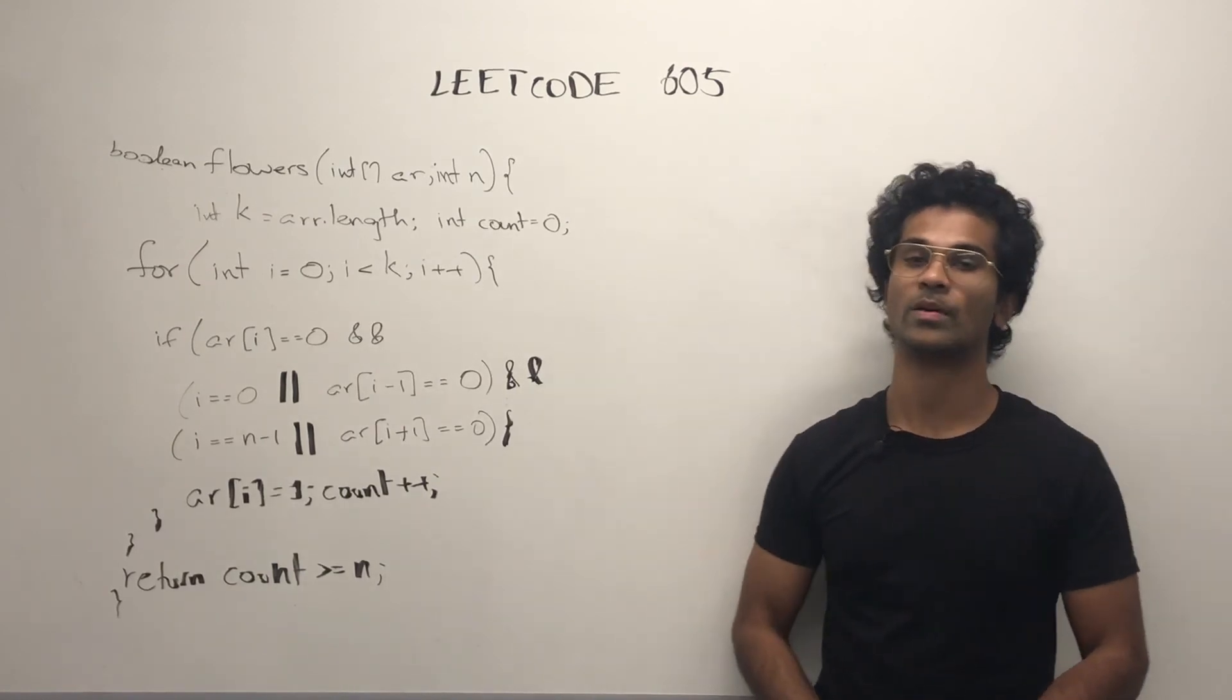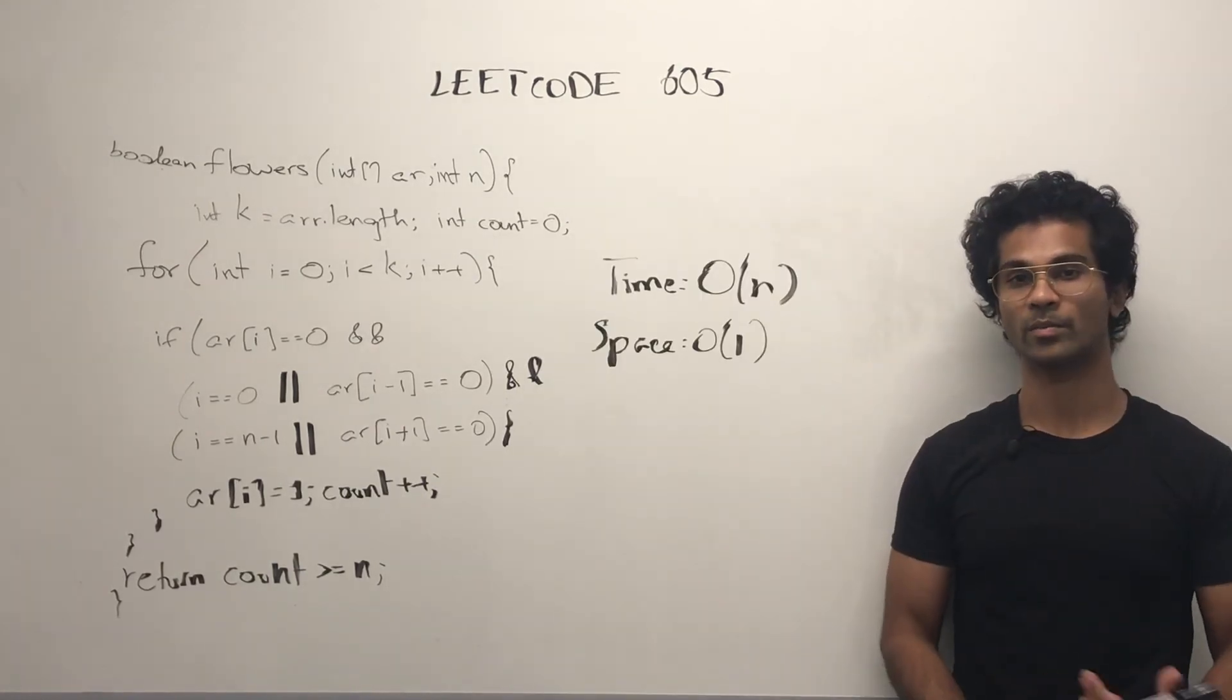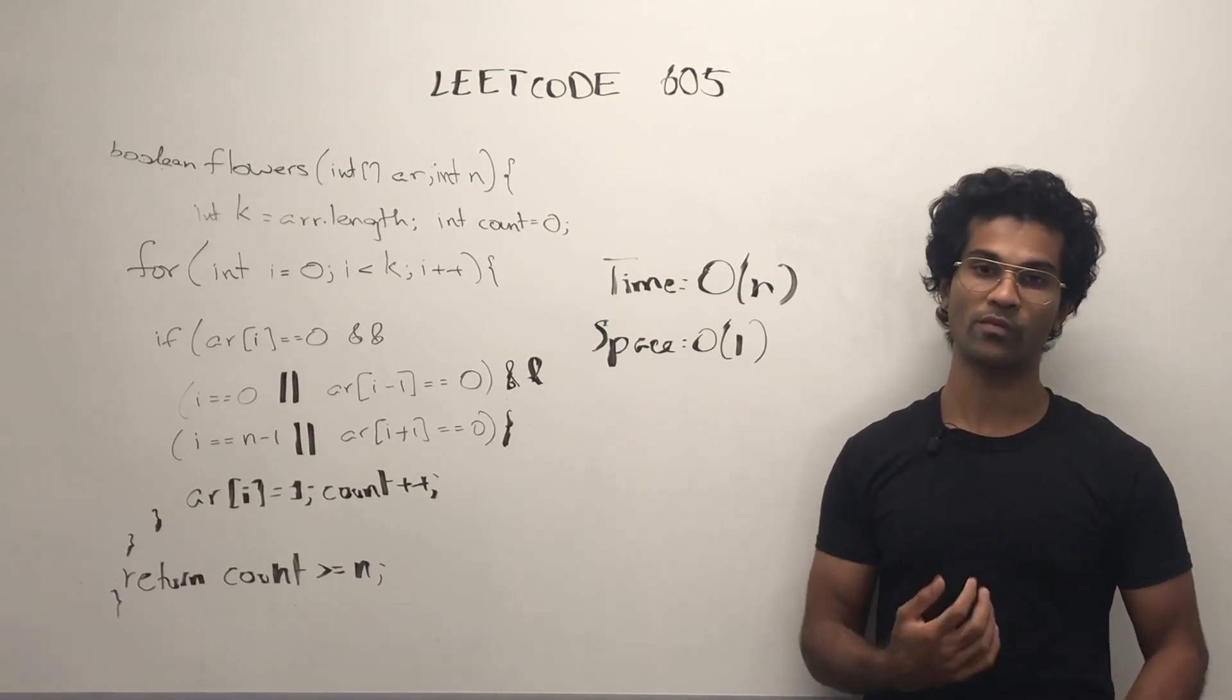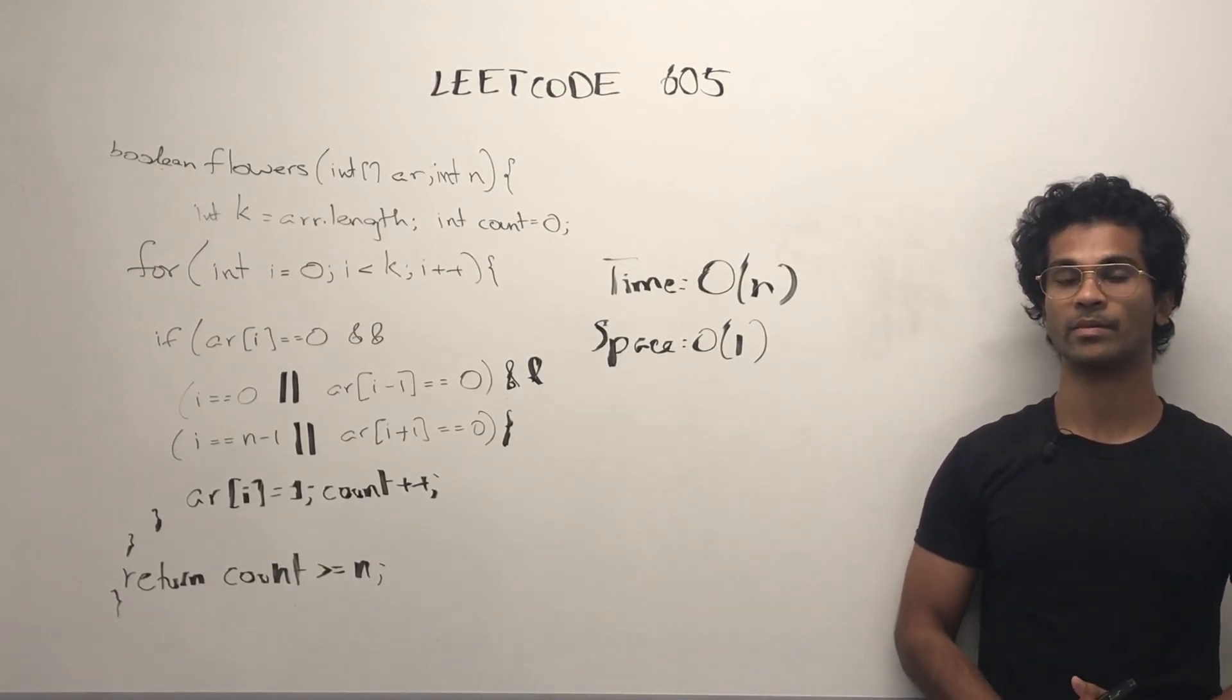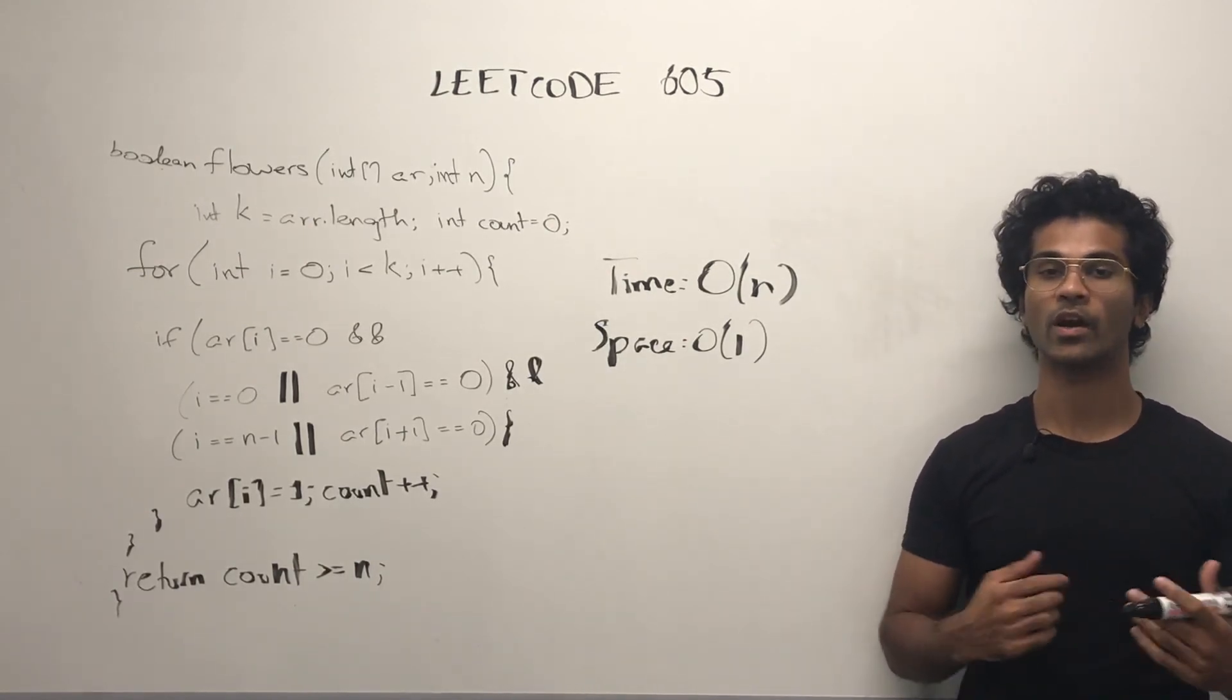Now let's look at the time and space complexity. The time complexity is simple. We're just iterating through the array once, so it's going to be O(n), and the space complexity is going to be O(1), because we're using constant space.